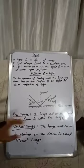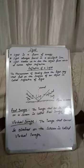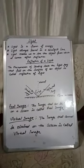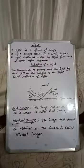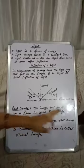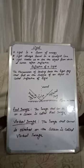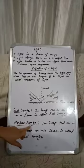Now let us discuss what is a real image. The image that can be obtained on a screen is called a real image. For example, the image of actors on a screen in a cinema hall is a real image.